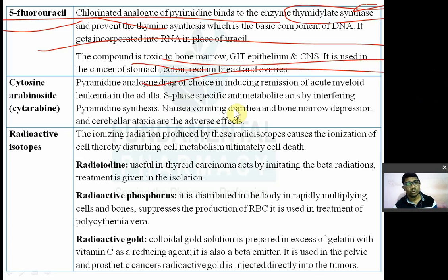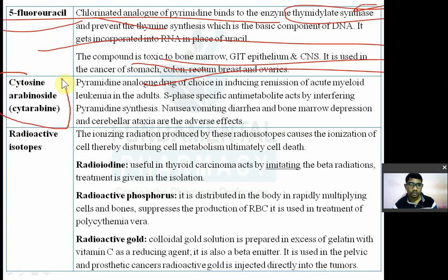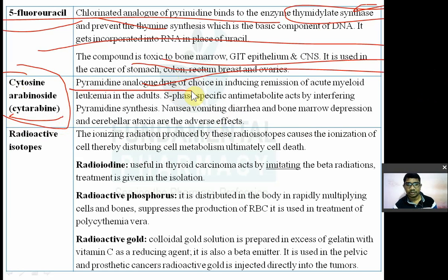The next drug is cytosine arabinoside, also known as cytarabine. It is a pyrimidine analogue and is the drug of choice for inducing remission of acute myeloid leukemia in adults.